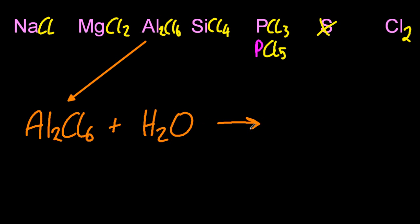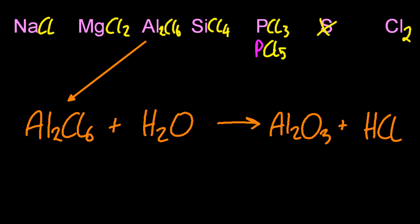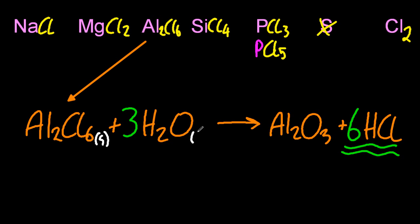Aluminium chloride with water is going to give me aluminium oxide and hydrochloric acid — hydrochloric acid comes up pretty much all the time. If we're going to be fussy about state symbols: aluminium chloride is a solid, aluminium oxide is ionic so it's going to be a solid, and hydrochloric acid is a solution.